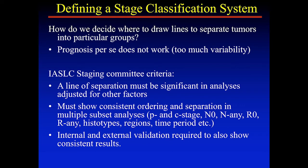So how do we decide where to draw the line between different groups, given that prognosis per se doesn't actually work cleanly? What the staging committee concluded was that a cutpoint had to look like a good place to draw the line across multiple assessments. For example, if three centimeters was a good place to draw the line between T1 and T2, it had to hold up in North America, Europe, and Asia, for adenocarcinoma and squamous cell, clinical stage and path stage — consistently across all of those.